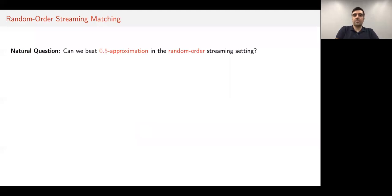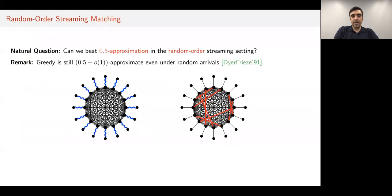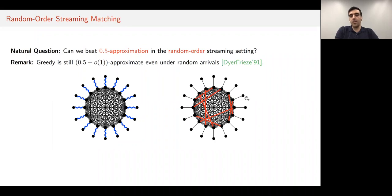The first natural question is: can we beat the greedy half approximation, given that edges arrive in a random order? The first barrier is that the greedy algorithm is still only half approximate in random order, as first observed by Dyer and Frieze in '91. The graph on the left shows a perfect matching covering every vertex, but if you run greedy in random order, you're more likely to put the edges of the clique into your matching, preventing you from matching vertices outside. So you only get a half approximation.